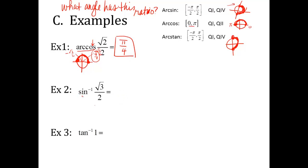Example 2: arc cosine of square root of 3 over 2. With sine, the limitations go from quadrant 1 to quadrant 4. We're looking for an angle with a sine of √3/2. That's a positive sine value, meaning positive y values — only quadrant 1. The angle in quadrant 1 with a y value of √3/2 is pi over 3. So the answer is pi over 3. You'll use your unit circles quite a bit.